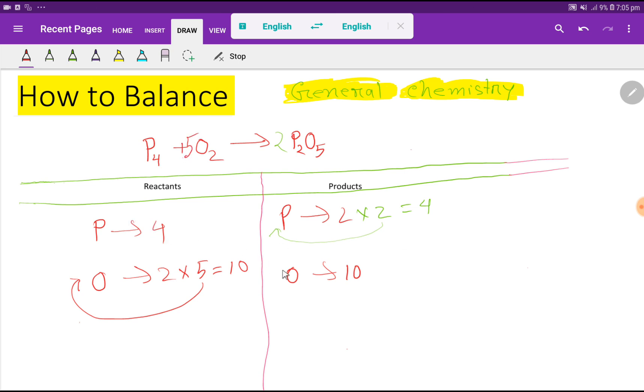Look, four four, ten ten, everything is balanced. So you can say that this is the balanced equation. At last you have to delete this arrow sign by equal sign. So this is the balanced reaction equation.